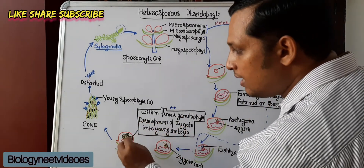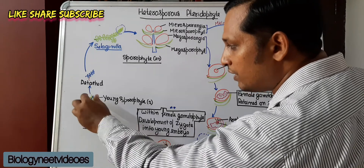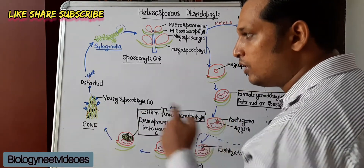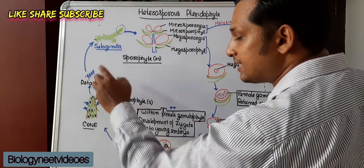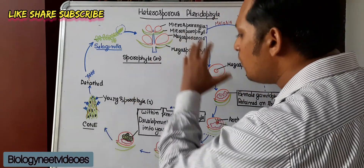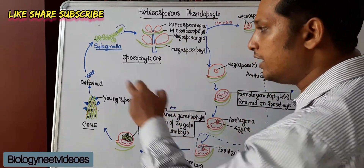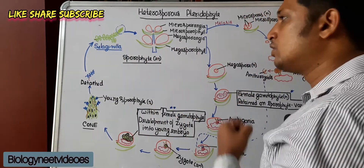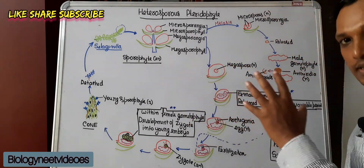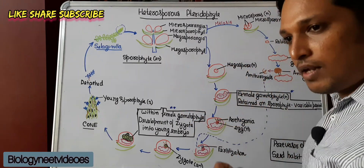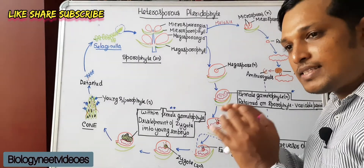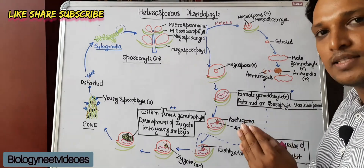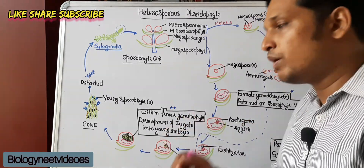What happens to the young embryo? The young embryo germinates into a young sporophyte within the cone, as all these structures are part of the cone. It develops a primary root, and then the young sporophyte is released. Until now, all events were taking place within the megasporangium only. The sporophyte is released and develops into the adult sporophyte. This is why heterosporous pteridophytes are important in the course of evolution — seed habit began from these heterosporous species, and later gymnosperms and angiosperms formed seeds.